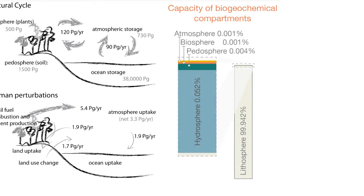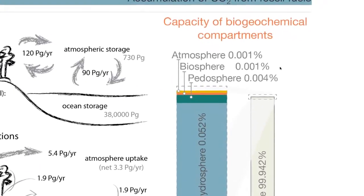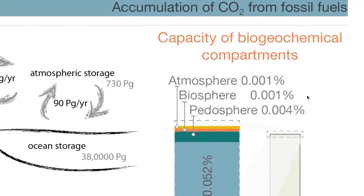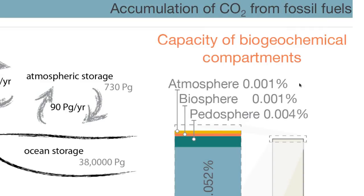The largest reservoir is the lithosphere, which is essentially the Earth, and that is where the fossil fuels are being stored. The hydrosphere is the second largest, which is the ocean, and then you have the pedosphere, which is the soil, the biosphere, which comprises the plant life, and then the atmosphere. Notice that together the atmosphere, biosphere, and pedosphere are less than 0.1% of the compartmental storage of CO2.